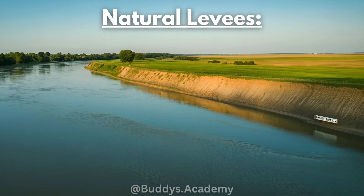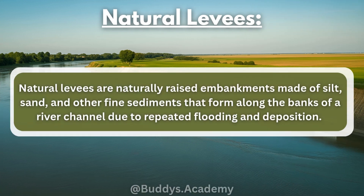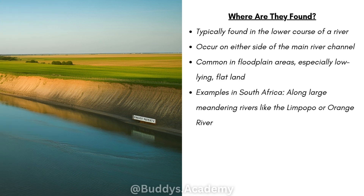So now let's take a look at natural levees. Natural levees are naturally raised embankments made of silt, sand and other fine sediments that form along the banks of a river channel due to repeated flooding and deposition. Remember, silt is your very fine sand. Natural levees are typically found in the lower course of the river, occurring on either side of your main river channel.